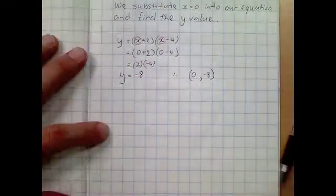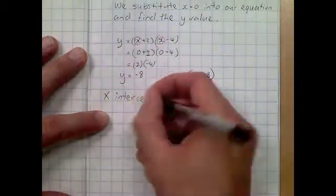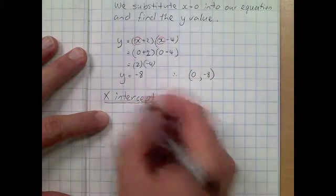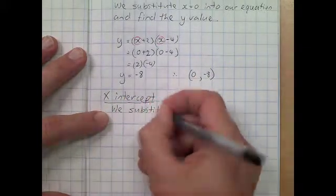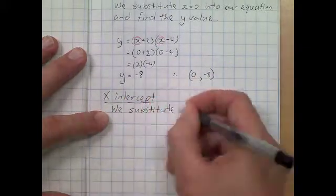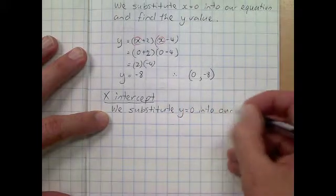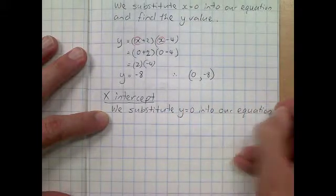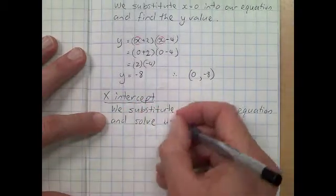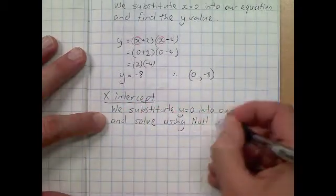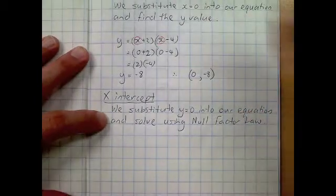Our next key feature is our x-intercepts. This is a relatively easy process when it's in factored form. To find our x-intercept we substitute y equals 0 into our equation and we're going to use the null factor law. We've talked about the null factor law in class, so this is not new to anyone.